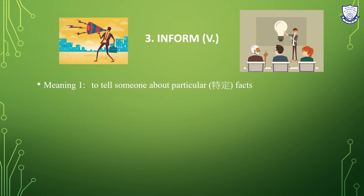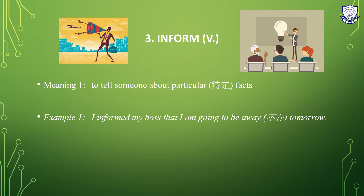Number three: 'inform'. It is a verb. The meaning is to tell someone about particular facts. Example: I informed my boss that I am going to be away tomorrow. The meaning of 'inform' is almost the same as 'tell', but the difference is that 'inform' sounds more formal. When you speak or write to your boss at work, you may actually use the word 'inform' because it is more formal and sounds more polite.